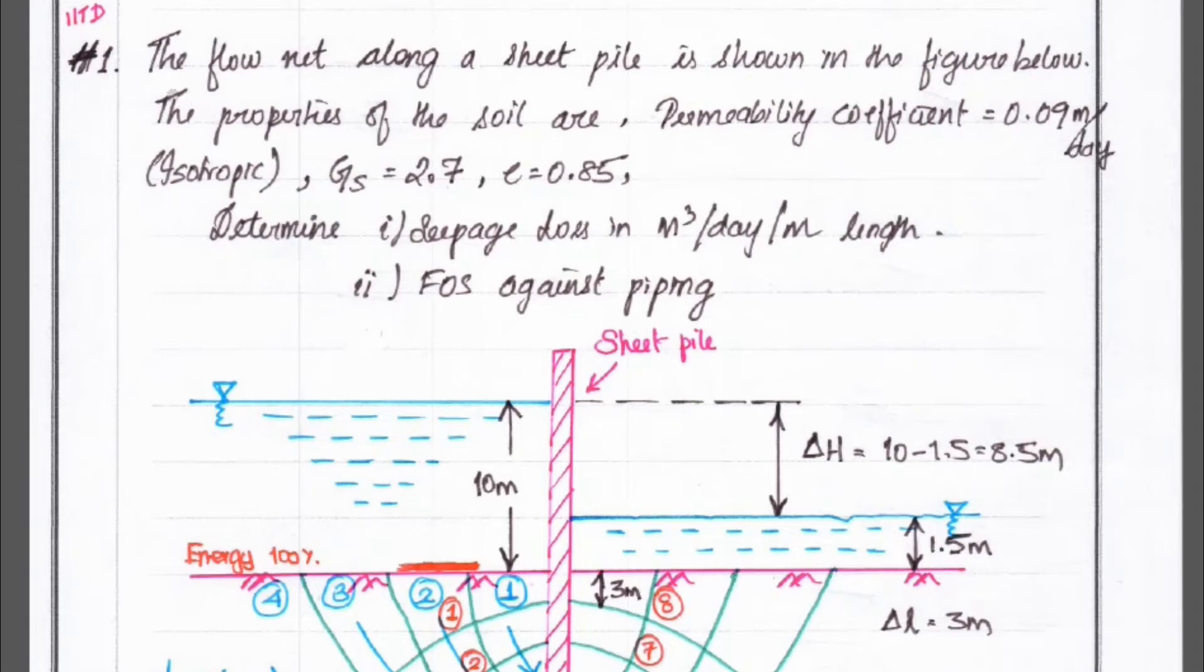Hello friends, today we are going to see the problem related with flow net. The problem is the flow net along the sheet pile is shown in figure. The properties of soil or the coefficient of permeability is 0.09 meter per day. This is isotropic.